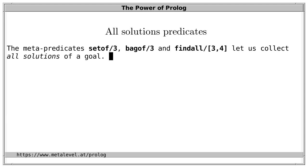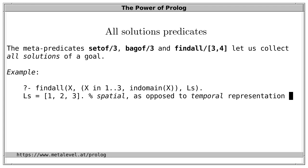Then there are predicates that let us collect all solutions of a goal. For example, we can ask for all solutions if x is a concrete integer between 1 and 3. And as answer, we get a list of all values that x can assume. This is called a spatial as opposed to a temporal representation because the solutions are now available as an explicit list in memory instead of appearing over time on backtracking.